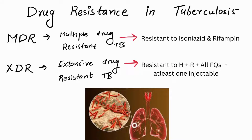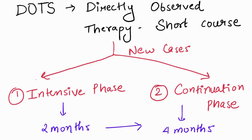The main problem with TB treatment is drug resistance. Over time, this bacteria has developed multi-drug resistant strains, known as MDR-TB, and also extensively drug-resistant strains, known as XDR-TB. These are even more challenging to treat, so it's very important to take medication exactly as prescribed to prevent the development of drug resistance.